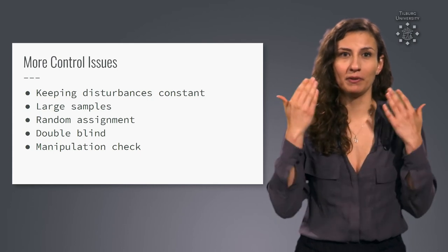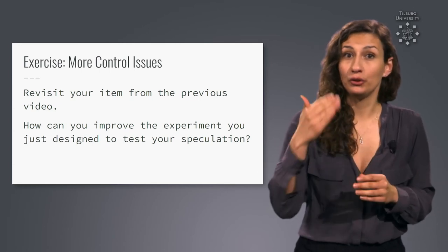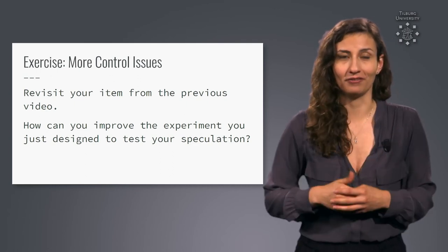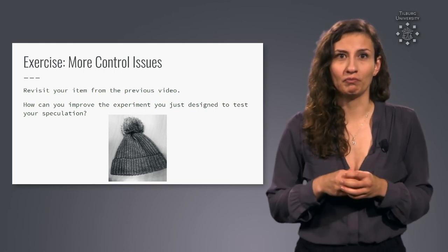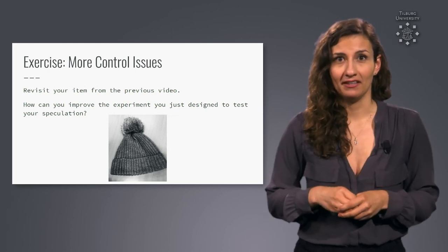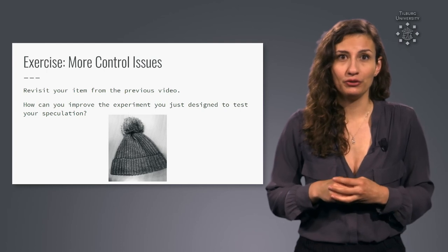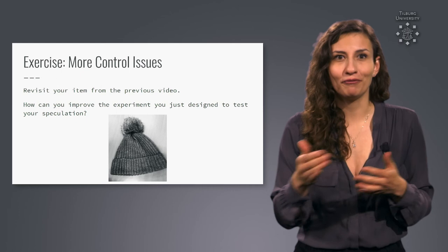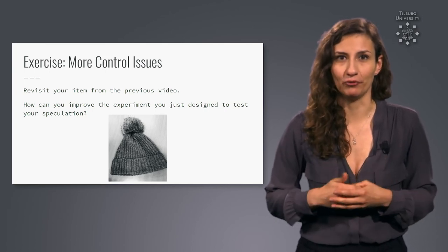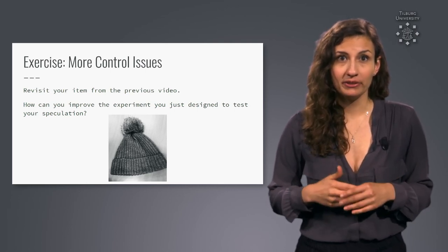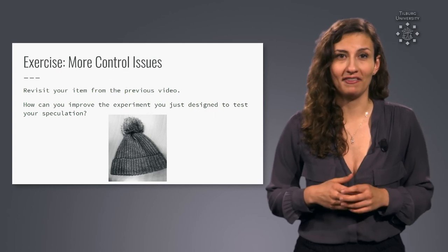Now we have a list of things to keep in mind when designing our experiment. Revisit your item from the previous video — how can you improve the experiment you just designed? In my case, I would study only bald men, sample a lot of them, and randomly assign them to the snug versus loose hat conditions. Keeping the researcher administering the study blind will not work, unfortunately, because they can see the hats they distribute. We could use different researchers for the different conditions and not inform them about the other condition. And we could not tell participants about the other hat condition until after the experiment. For the manipulation check, we would make sure that participants put the hat on properly, with the researchers in charge of positioning it correctly.